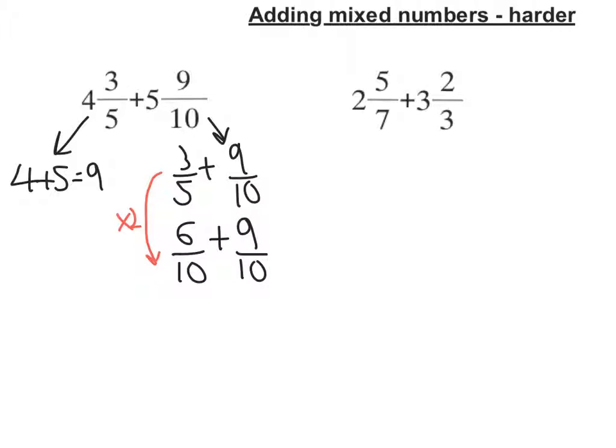So 6 tenths plus 9 tenths is 15 tenths. And I can simplify this down, because 5 goes into 15 and 10, so that becomes 3 over 2. And I can't leave it as a top-heavy fraction, so 3 halves is the same as 1 and 1 half.